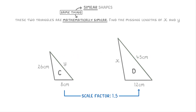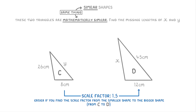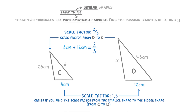One last tip: it's much easier if you always find the scale factor from the smaller shape to the bigger shape, like we did in this question. You can find it from the bigger shape to the smaller shape, but you'll end up with a scale factor less than 1, which is confusing to work with. For example, finding the scale factor from D to C gives 8 divided by 12, which is 2 thirds — and it's harder to multiply and divide by a number smaller than one. So always find the scale factor from the smaller shape to the bigger shape.